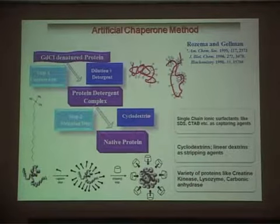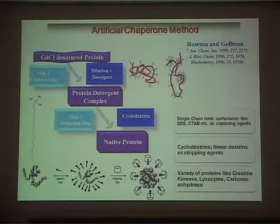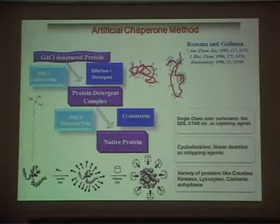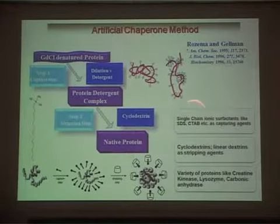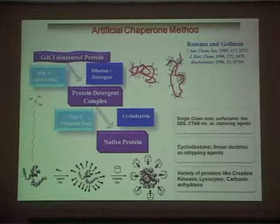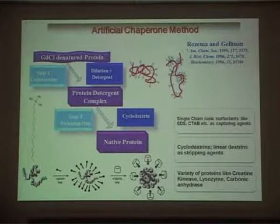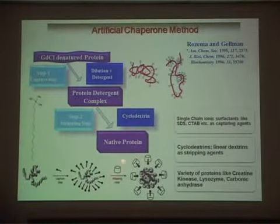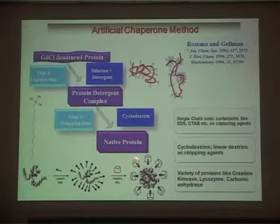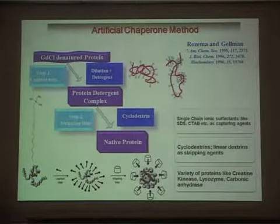This technique was introduced around 1995-1996 by Rozema and Gelman. So far, people have used single-chain ionic surfactants such as sodium dodecyl sulfate and cetyltrimethylammonium bromide as capturing agents. The problem was that high concentrations of these surfactants were required to capture the protein, and once high surfactant concentration is used, the stripping agent is not able to strip off the surfactant quickly enough, resulting in aggregation.